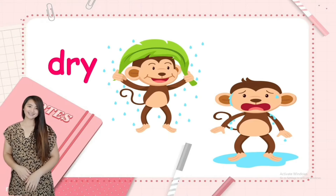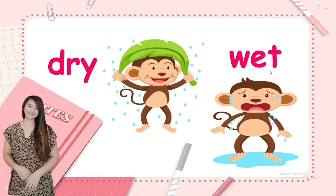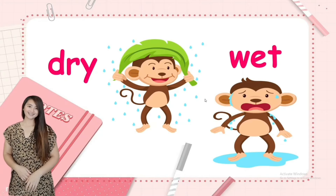Next, we have dry and wet. This monkey is dry because he has a leaf to cover himself, and this monkey is wet. Everybody say: dry monkey, wet monkey. Dry and wet are opposite ways.